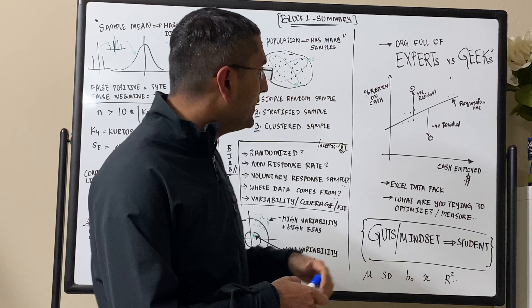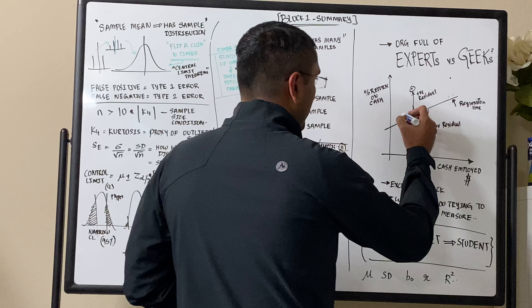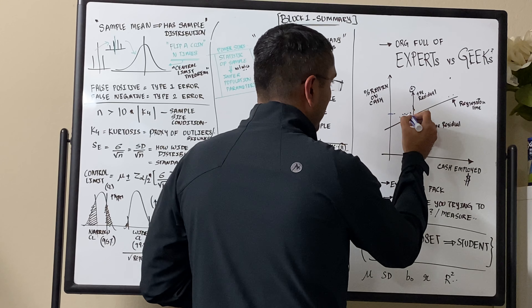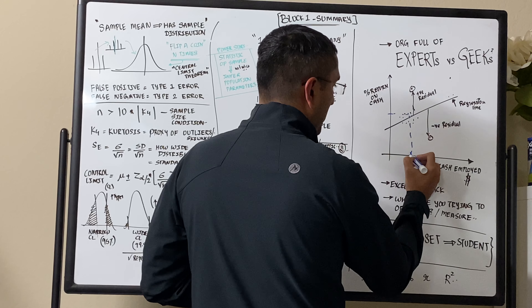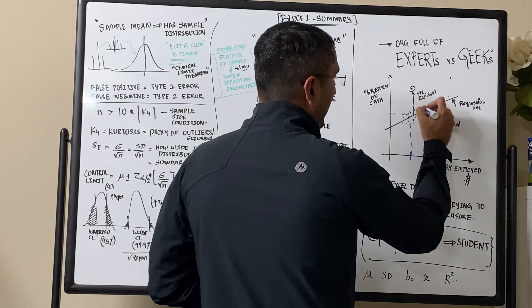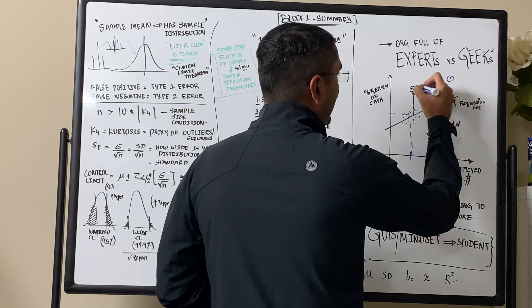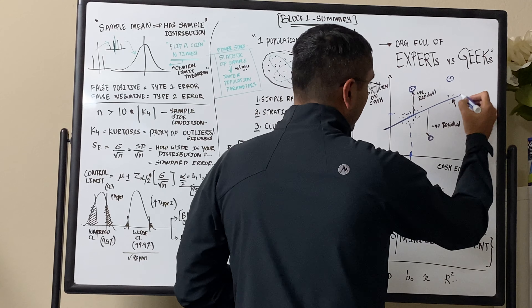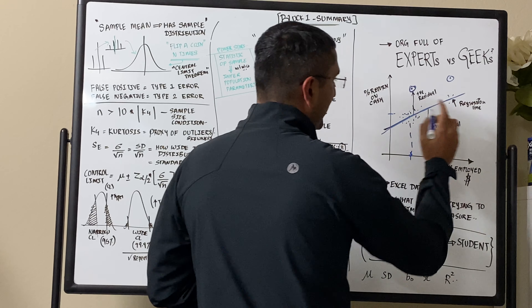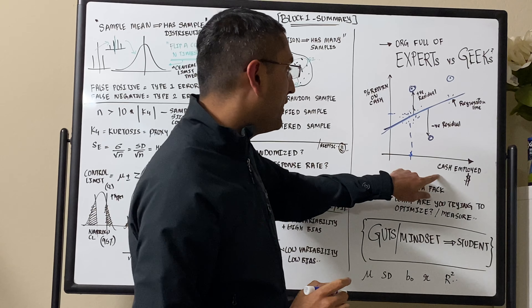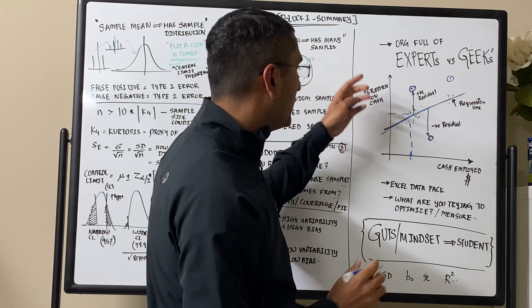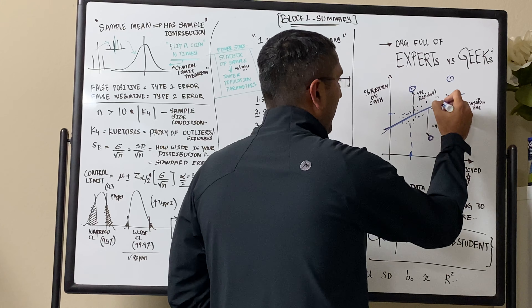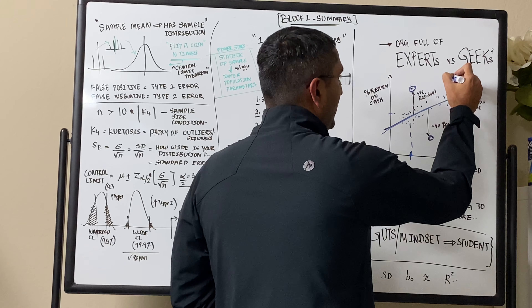When you do that for many companies, you will get data points showing for a specific amount of cash, a specific return. When you plot these, you'll probably get some outliers, but then you can draw a regression line. You can do all this in Excel — for a given amount of cash, what's the cash return? Do it for hundreds of companies and you will get data points along this line, with some outliers.